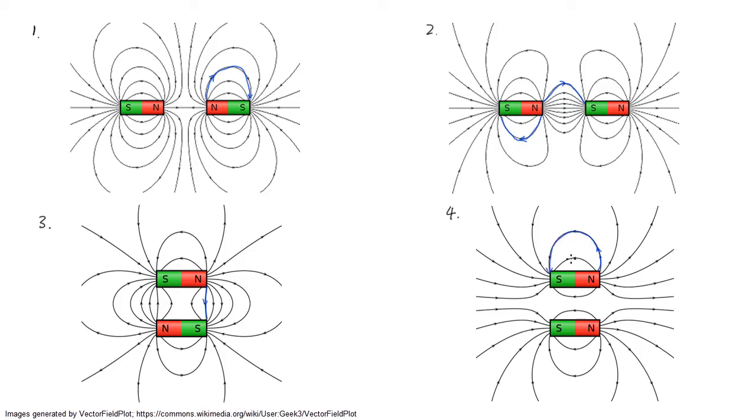Looking at these images, we know from real life experience that the magnets in image one and four would repel each other. And the magnets in image two and three would attract each other. The field lines in image one and four go back to the magnet from where it came from. While in image two and three, the field lines can come from a different magnet than the one it goes to.